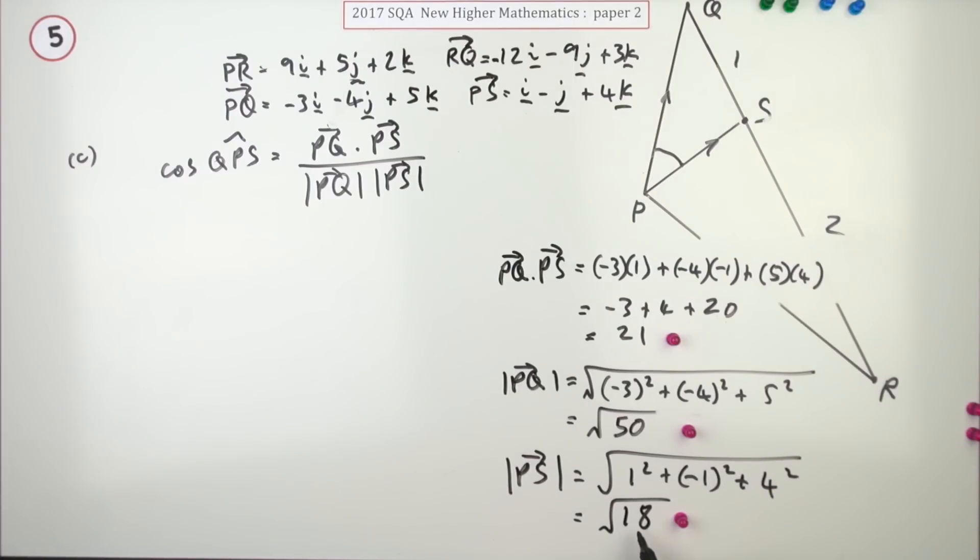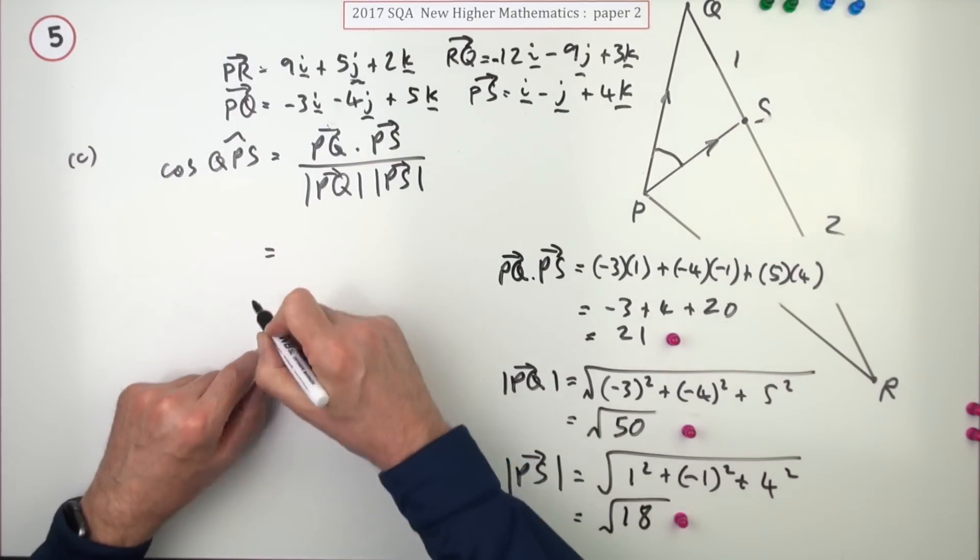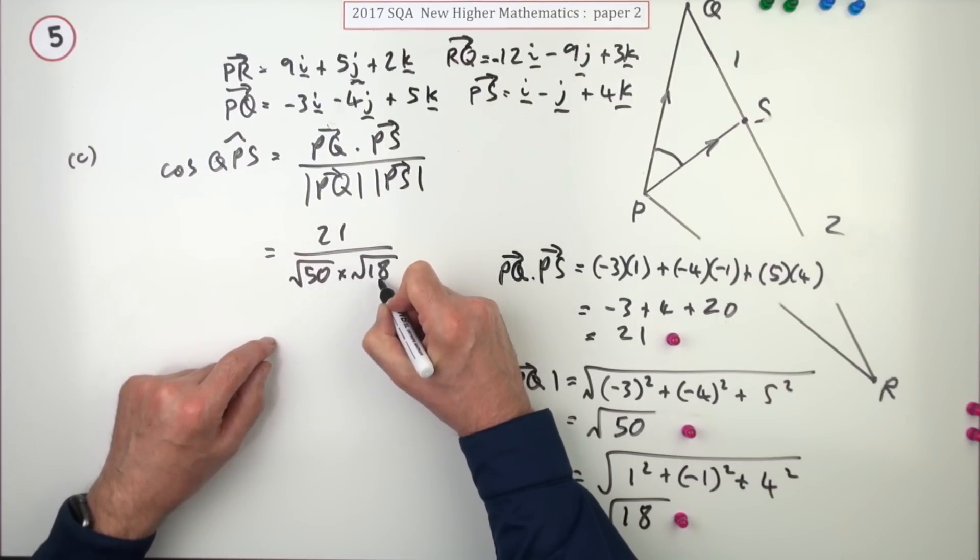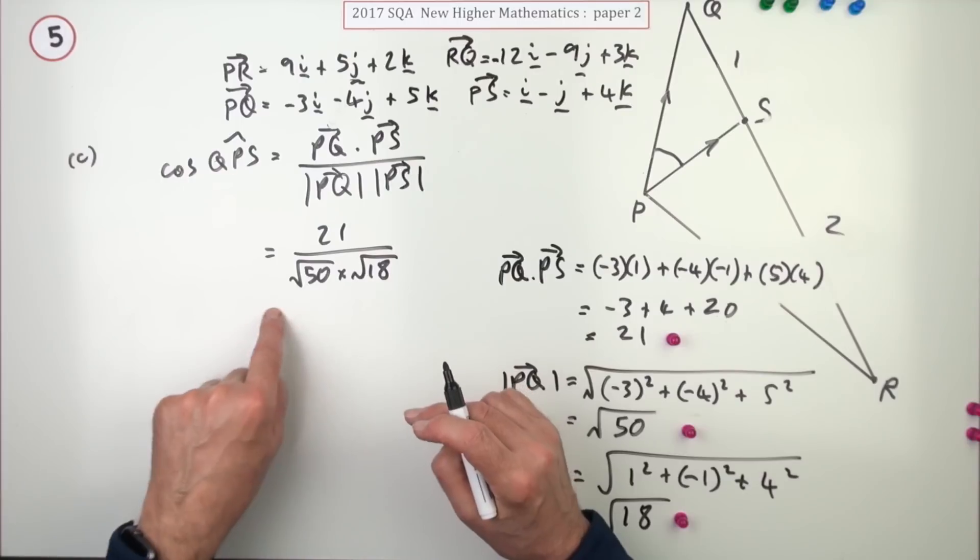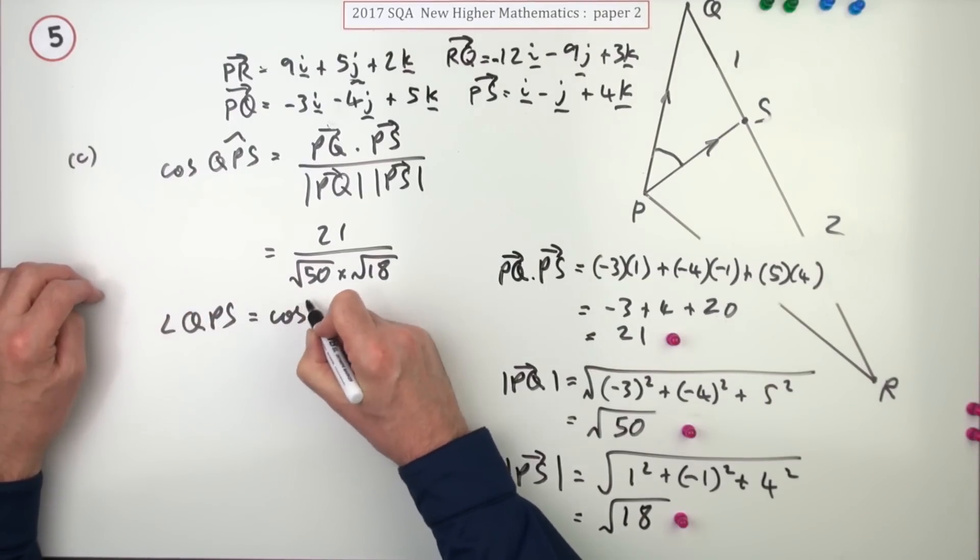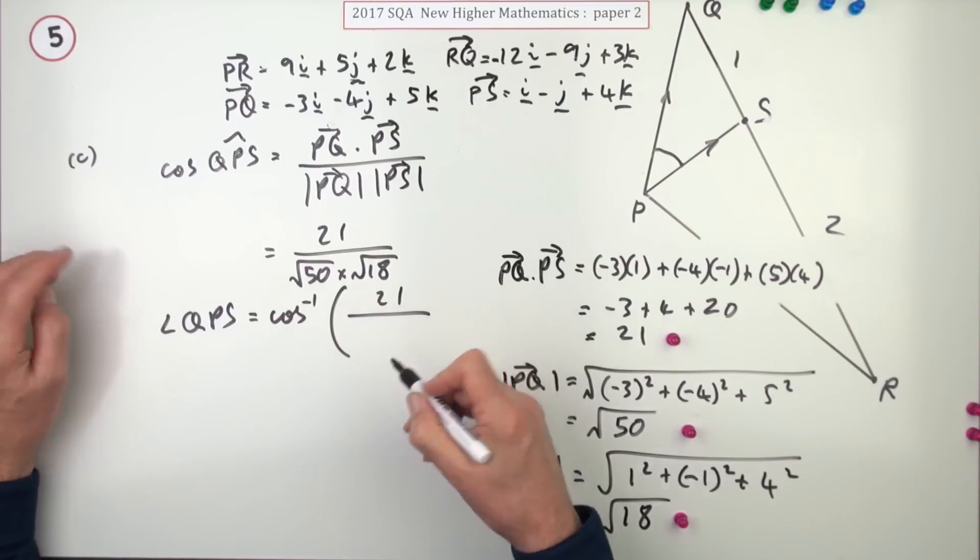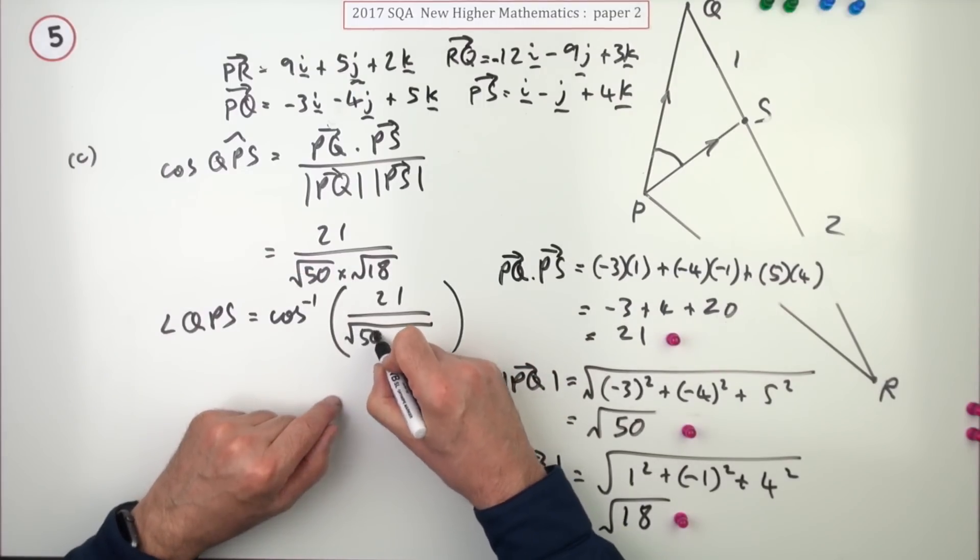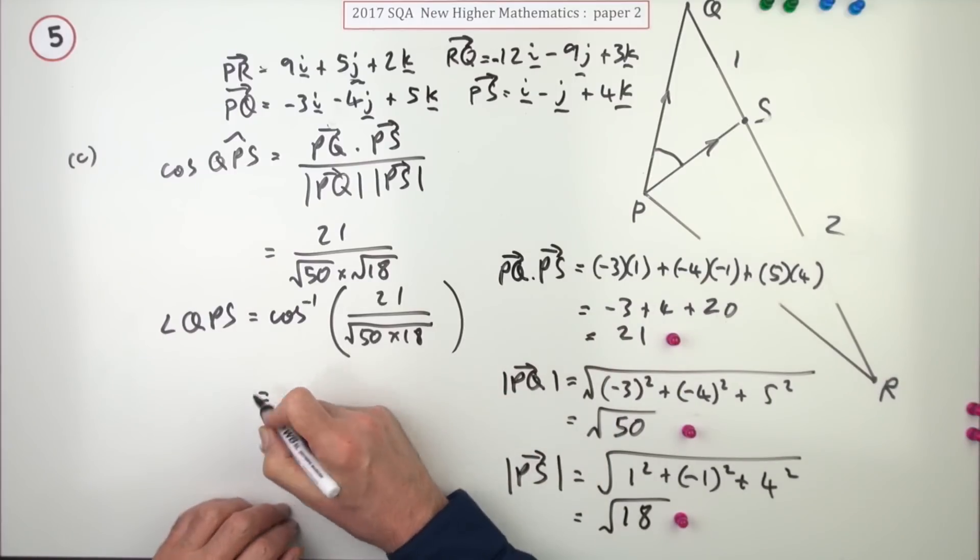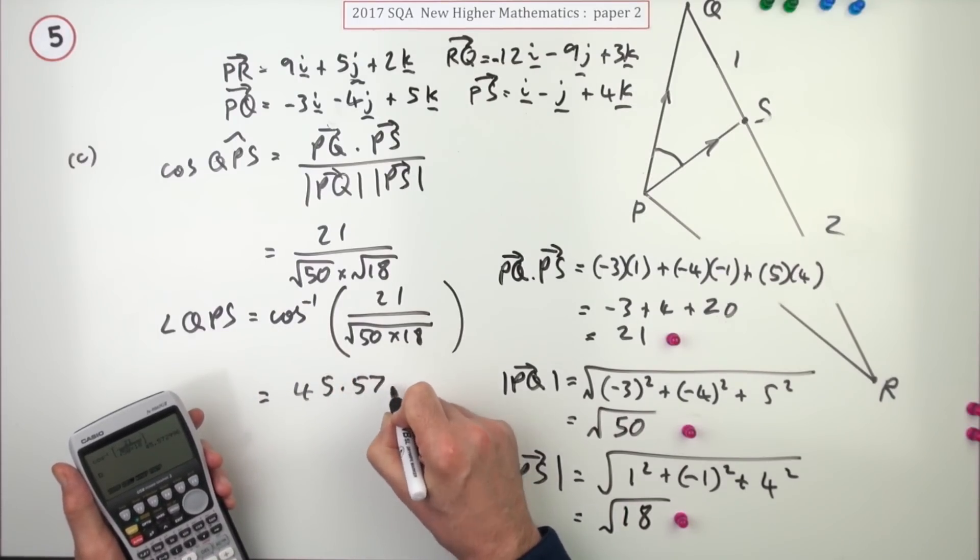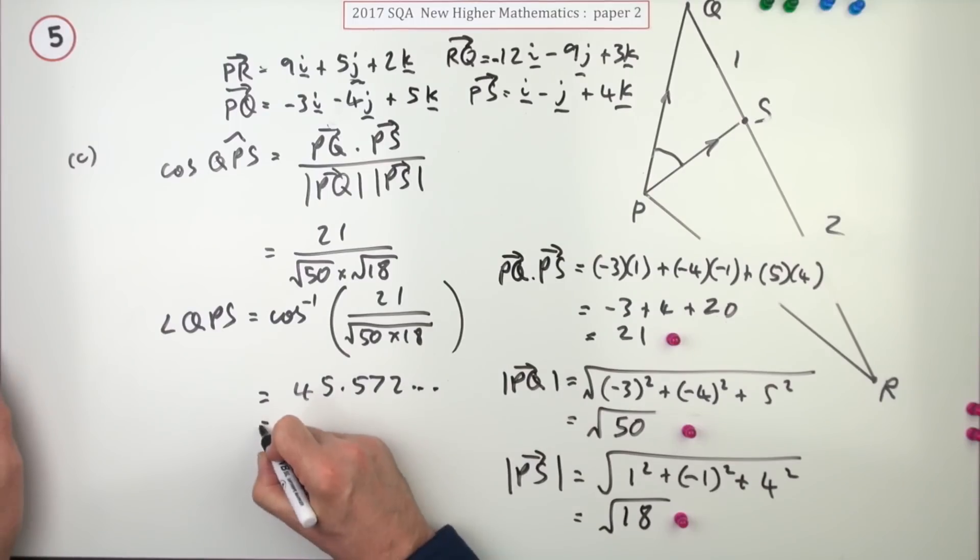So you've got 21 over root 50 times root 18. Now, that does work out to be quite a neat number. You could replace that with a nice little integer there. But it's not really going to gain you anything, because in order to find out that, you're going to have to do the inverse cos of this thing. You'll be typing it into your calculator anyway. And the only thing about typing it in is, the product of the roots is the root of the product. You can just put 50 times 18 in there when you type it in. Now, let's just press the buttons. And you get 45.572 and so on. So I'll put that down as 45.6 degrees.